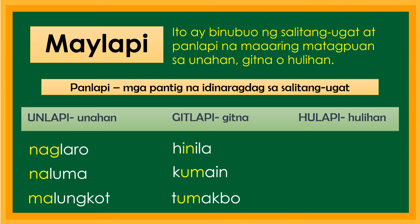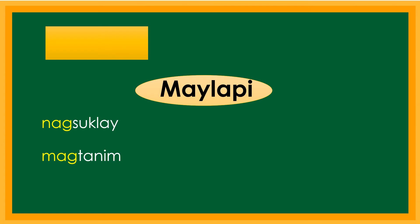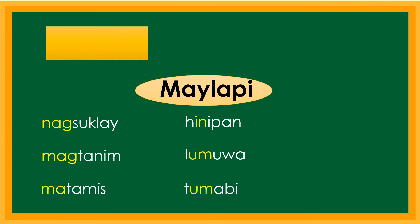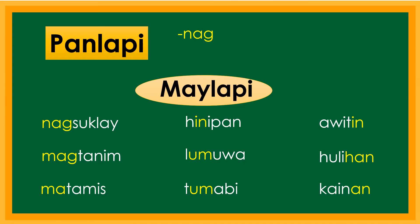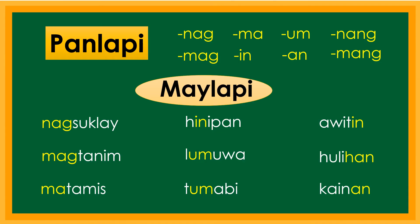Ang hulapi naman ay ginagamit sa hulihan ng salitang ugat. Halimbawa: aralin, awitan, gandahan. Iba pang halimbawa ng may lapi: nagsuklay, magtanim, matamis, hinipan, lumuwa, tumabi, awitin, hulihan, kainan. Tandaan, ang mga panlaping nag, mag, ma, in, um, an, nang, mang ay mga panlaping idinaragdag sa unahan, sa gitna, o sa hulihan ng salitang ugat. May lapi.